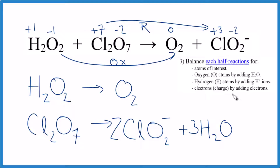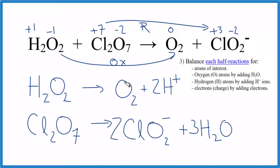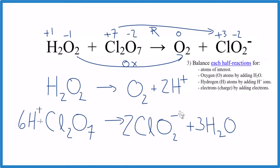For hydrogen atoms, since we're in acidic medium we can add H⁺ ions. For the oxidation half reaction, we add two hydrogen ions to balance the two hydrogens. For the reduction half reaction, we have three water molecules contributing six hydrogens, so we need to add six hydrogen ions to the other side.